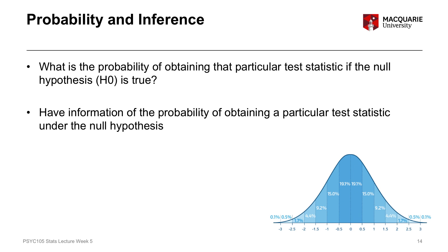The kind of test statistics we're talking about follow a certain distribution under the null hypothesis. So if the null hypothesis of no effect is true, we have information about how likely it is that we would observe any particular test statistic value in a given sample. We can use that information to determine whether we have enough evidence — enough certainty — to reject our null hypothesis, because the distribution of test statistics under the null hypothesis follows a predictable pattern.